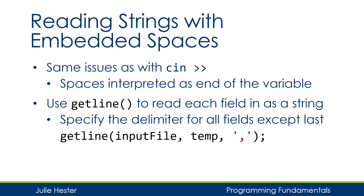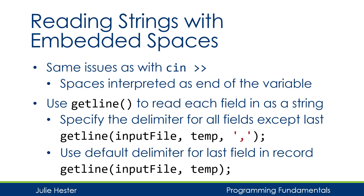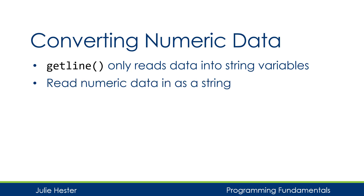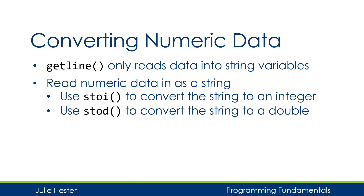When we use getline, we'll specify the delimiter for all fields except the last one. Here I'm using getline to read from the input file, saving the data into string variable temp, and reading through the comma — discarding the comma. When I get to the last field in the record, I'll use the default delimiter, which is the end-of-line marker. Because getline only reads data into string variables, we'll have to convert our numeric data from strings to integers and doubles.